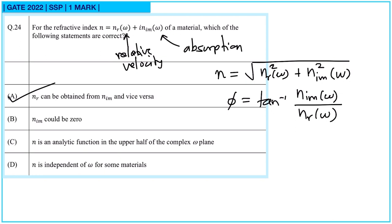Option B states n_im could be zero — if the medium is not absorbing then n_im can be zero, but it is not stated that way here. Option C states n is an analytic function in the upper half plane of complex omega — yes, that is correct. Option D states n is independent of omega for some materials, but both n_r and n_im are functions of omega, so n is not independent. Therefore two options are correct: A and C.